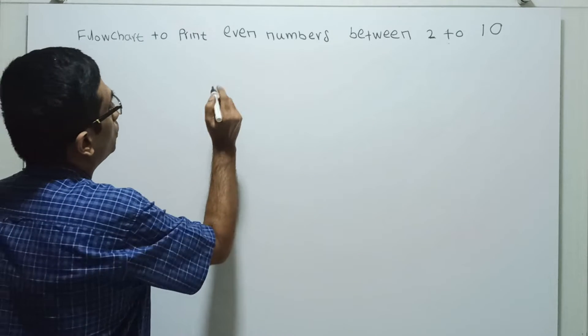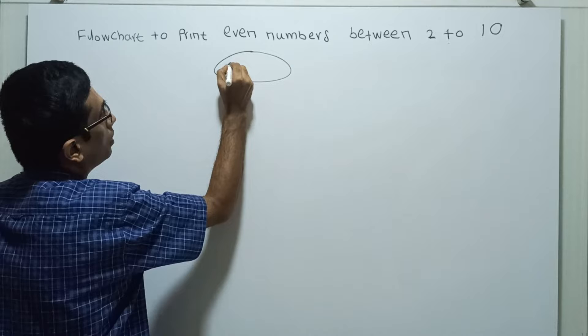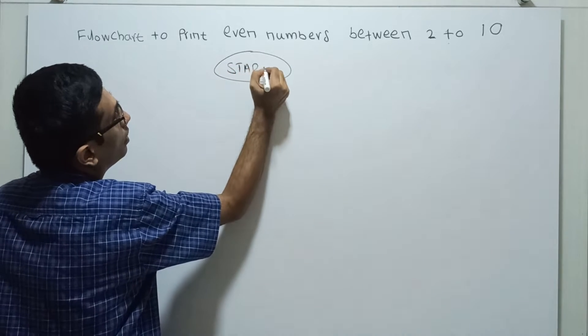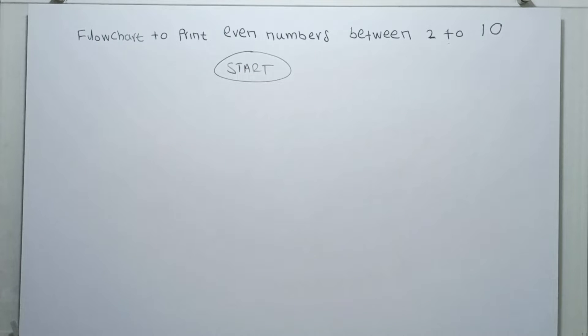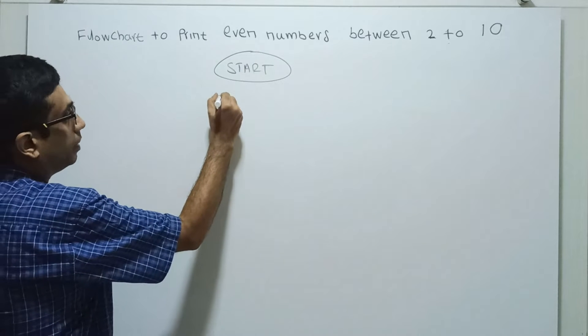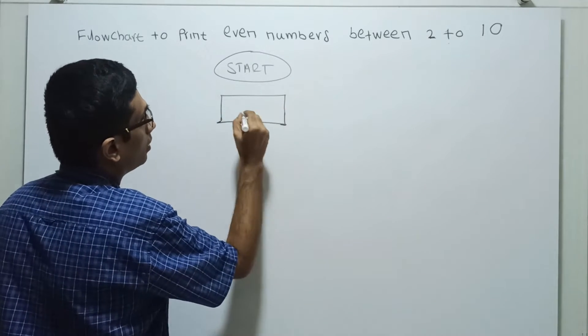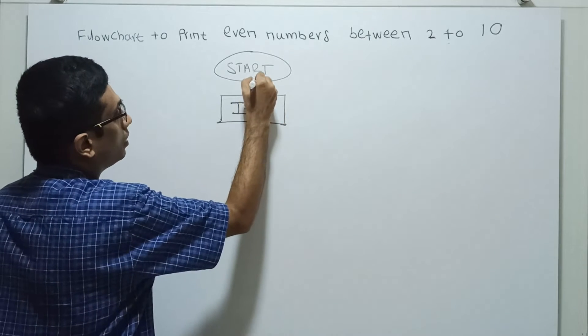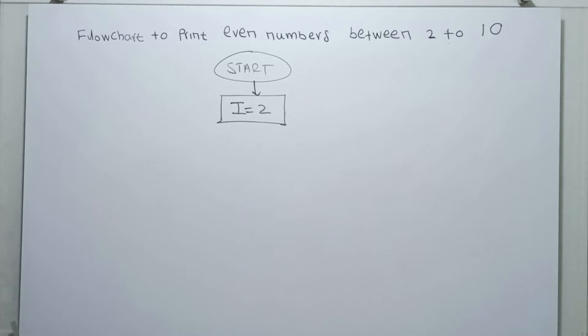So first, logical start of the flowchart. Now I am setting i equal to 2.